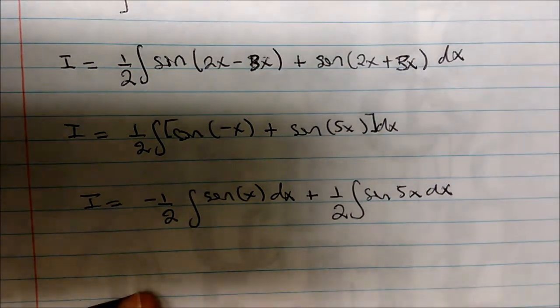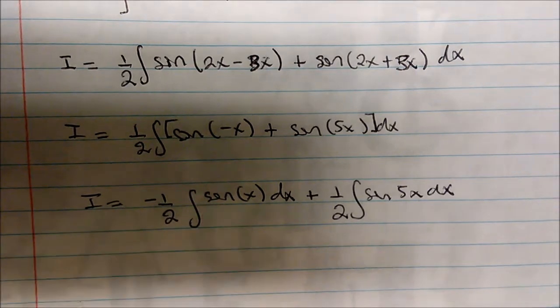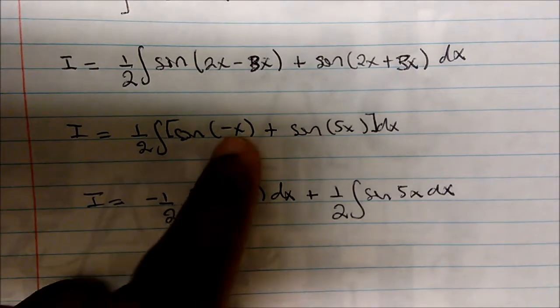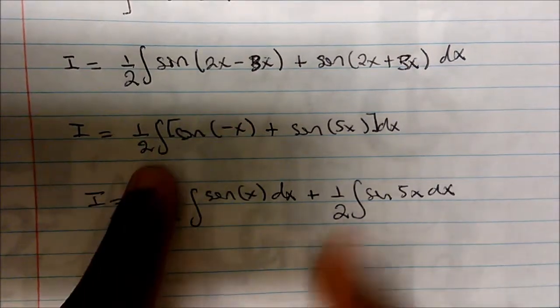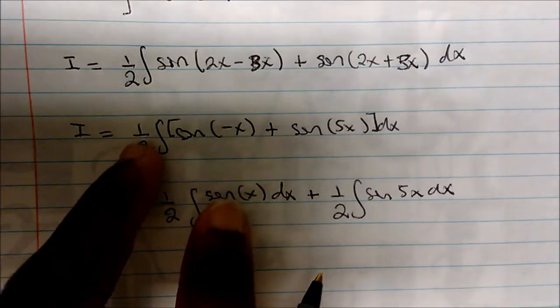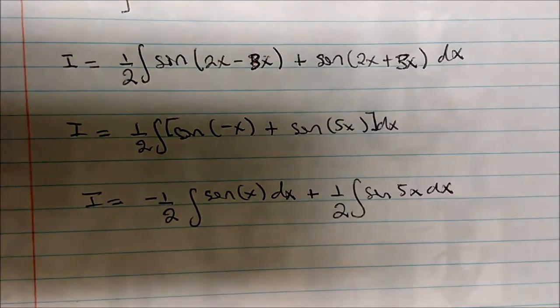Now remember this negative only applies to this integral, and not this integral here, so I still have my positive one half times the integral of sine of 5x dx. This negative only applies to this part of the integral, and not this part. This one half times the integral is distributed to this 5x here.